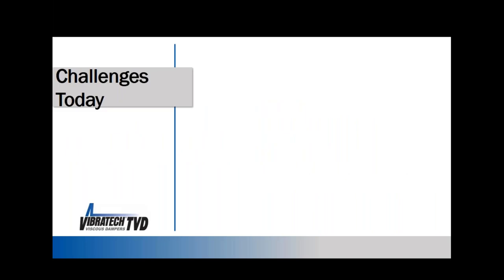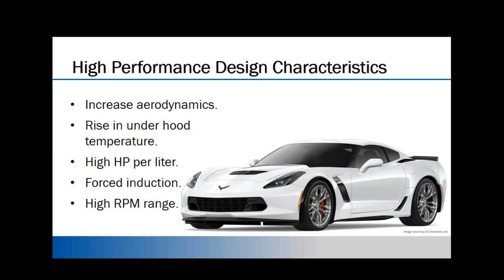Now let's talk about the challenges we're seeing today, both on the performance and OE side. Modern high-performance engines — whether race cars or OEM flagship cars — share a few trends: increased aerodynamics divert air around the engine bay rather than through it, raising under-hood temperatures. Higher horsepower per liter adds even more heat, and forced induction compounds this further. The result is higher vibration amplitudes, higher temperatures, and higher RPMs — a perfect recipe for greater torsional vibration challenges.